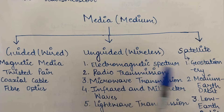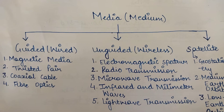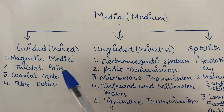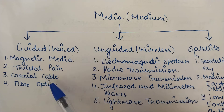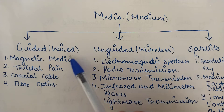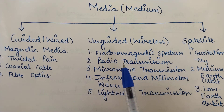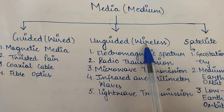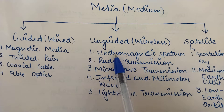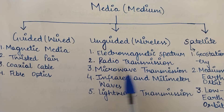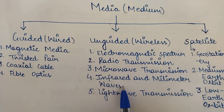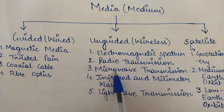Looking at guided media, there are four broad categories: magnetic media, twisted pair, coaxial cable, and fiber optics. These are the four different types of guided or wired transmission media because they use physical wires. For unguided or wireless transmission media — wireless because they do not use any wires and transmission is through air — the different types include electromagnetic spectrum, radio transmission, and microwave transmission.